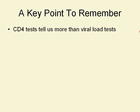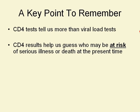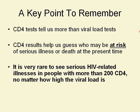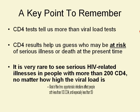A key point to remember is that CD4 tests tell us more than viral load tests. CD4 results can help us identify who's at risk of serious illness or death at the present time, because it's a marker of how the body is doing. It's really rare to see serious illnesses in people with more than 200 CD4, no matter how high or low the viral load is. It's really below 200 CD4 that people start to get into dangerous territory with regard to opportunistic infections, and under 200 CD4 cells is where the current AIDS definition rests.